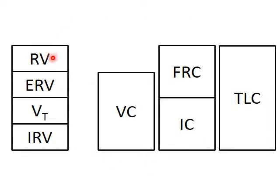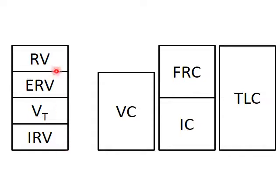Stacking up our four volumes, each capacity is a sum of one or more volumes. Vital capacity is the air we can move in and out of the lungs: inspiratory reserve plus tidal volume plus expiratory reserve. If we take a normal breath and then breathe in as much as we can, filling up all four volumes, that is our total lung capacity.